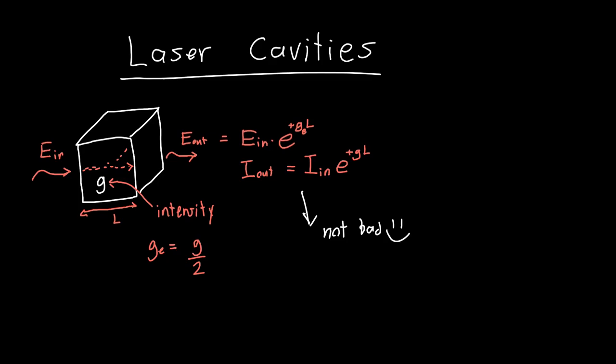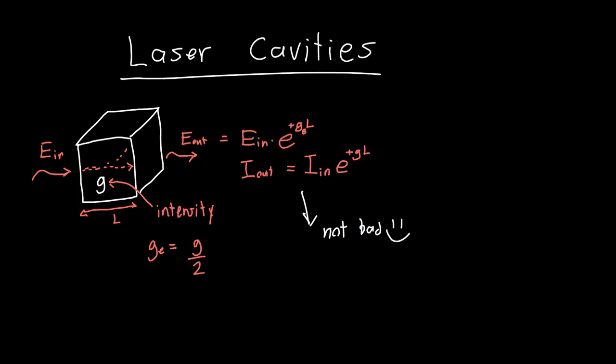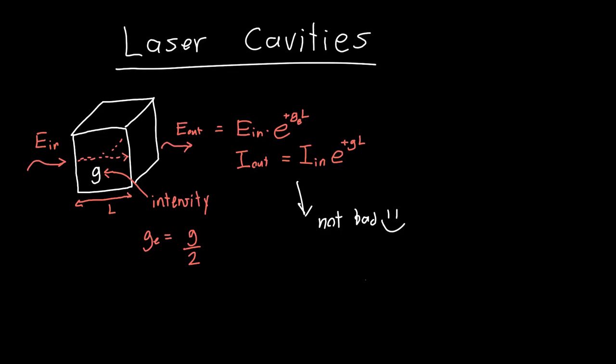But if instead we place this into a cavity, let's take this block of semiconductor and place it between a couple of mirrors. I'm gonna have mirror one on the left and mirror two on the right, and in between there's gonna be some semiconductor material with a given gain G.